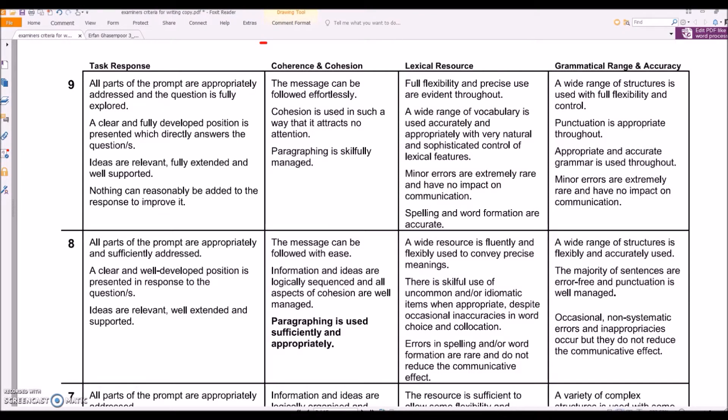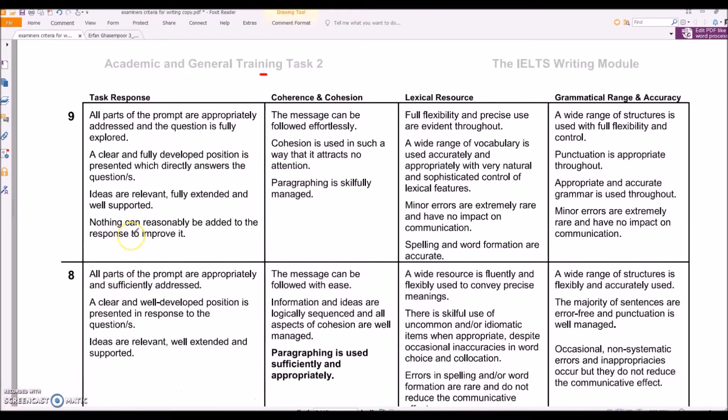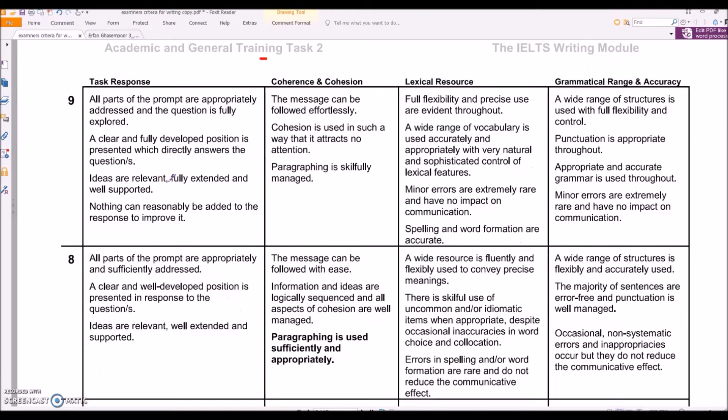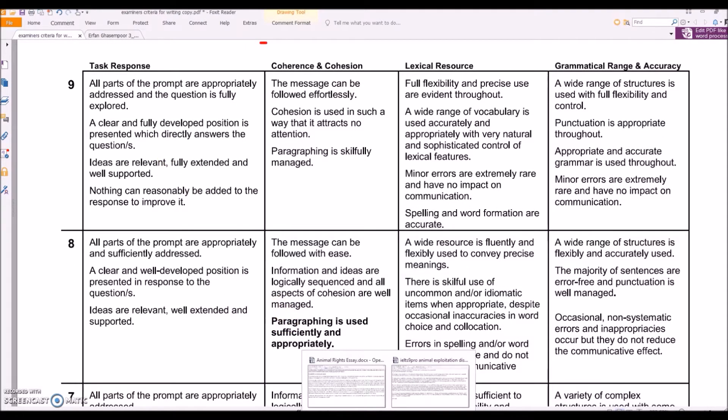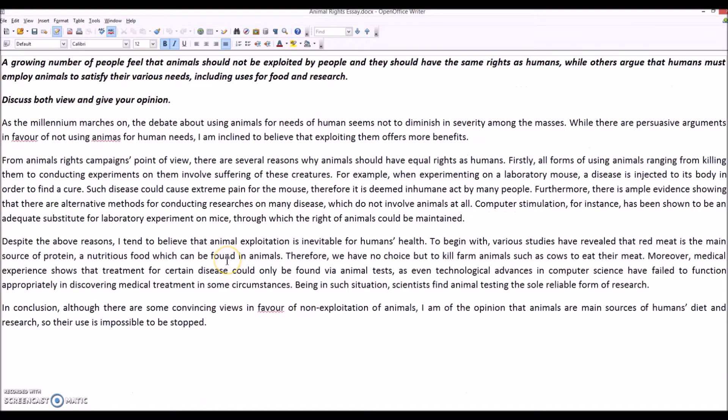So let's get started. I'm going to be referring to the official criteria to emphasize my points here. So let's see what we have. A growing number of people feel that animals should not be exploited by people. They should have the same rights as humans, while others argue that humans must employ animals. I'm usually in favor of, for your introduction, sentence one you paraphrase, mention what the views are, and give your opinion.